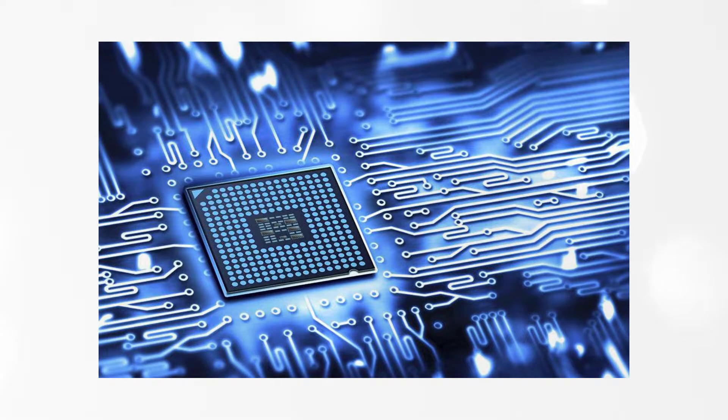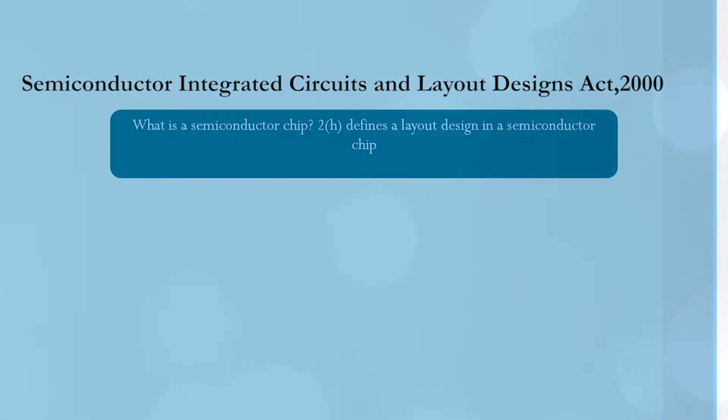The first topic we are going to discuss is the Semiconductor Integrated Circuits and Layout Designs Act. What is a semiconductor chip? If you look into any digital equipment, it is powered by some kind of a semiconductor chip. The chip act defines semiconductor in technical terms to include these chips. Chips have a unique functionality wherein there are layers and layers of fabricated material and designs embedded in them.